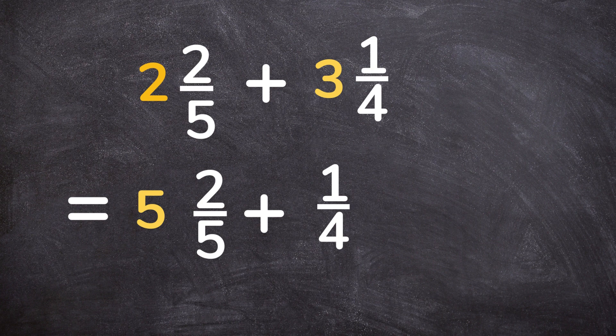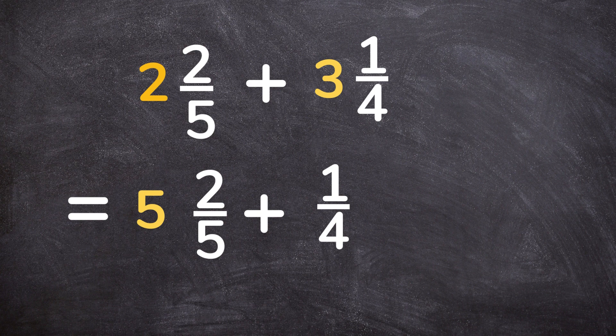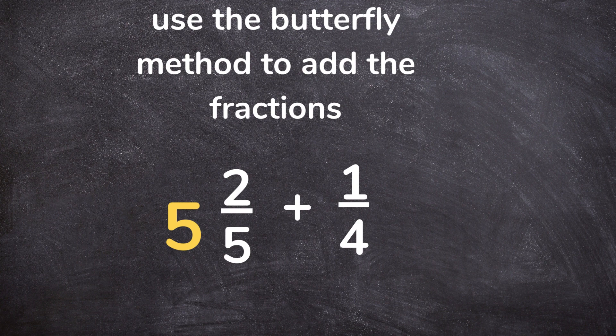So your new whole number is now 5. You put your 5 here and then now you add the fraction part, so you will have two-fifths plus one-quarter. The easiest way to add these fractions is to use the butterfly method.